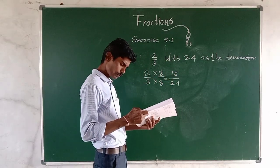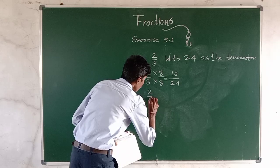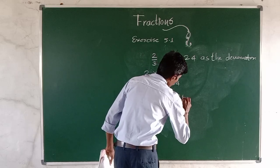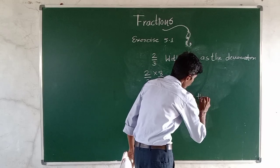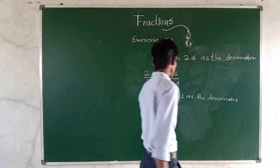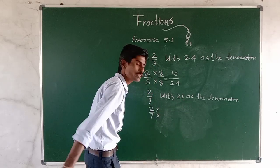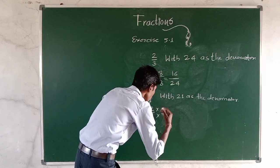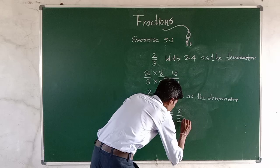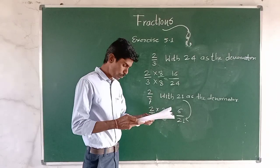Again, 2 by 7 with 21 as the denominator. Because 21 is greater than 7, we have to multiply by some number. 7 times 3 is 21, so we multiply by 3. 2 times 3 is 6, and 7 times 3 is 21. So 6 by 21 is the equivalent fraction.